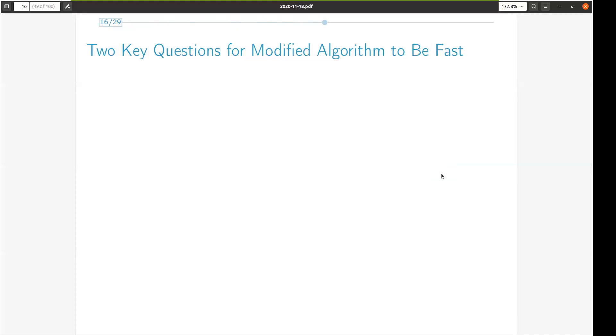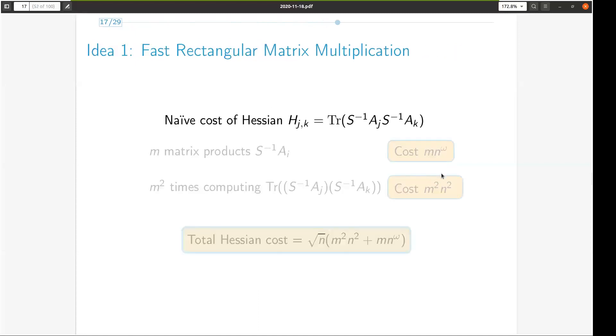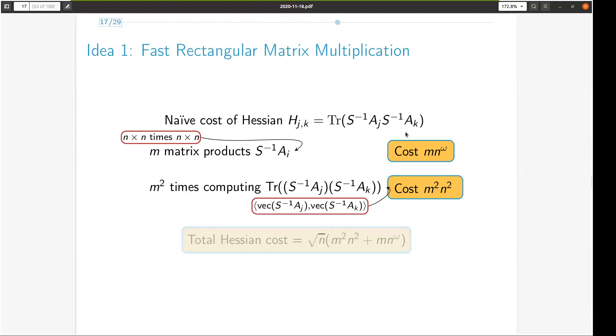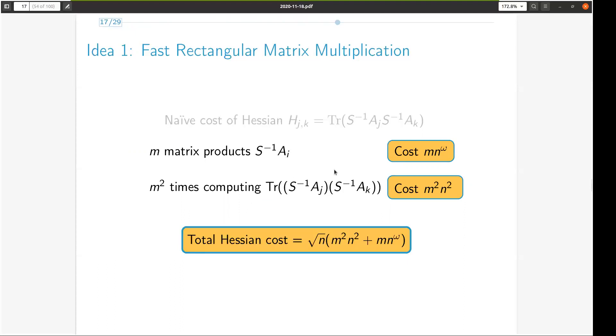Having seen correctness of our algorithm, the two key questions that remain to be addressed for the algorithm to be fast are how to compute the approximate slack matrix and how to compute the Hessian. We first observe what happens if we use a true slack matrix in all our calculations. Recall that this is the expression for the jkth entry of the Hessian. To compute the Hessian naively would require computing the m products of n by n matrices, and then m square inner products of n square length vectors, which has this total cost over square root n iterations.